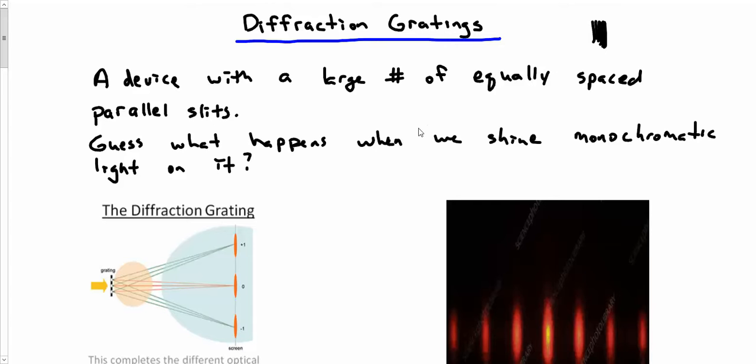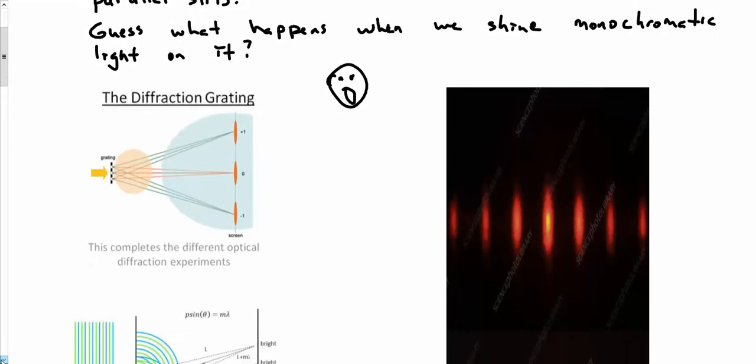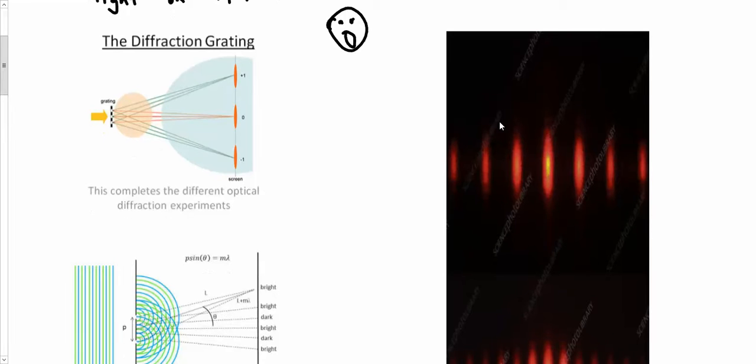Now if I shine monochromatic light on this, take a guess at what happens. I get a diffraction pattern. I get bright, dark, bright, dark, bright, dark.